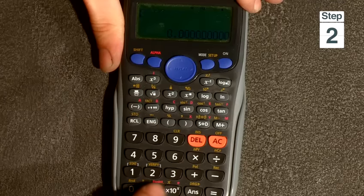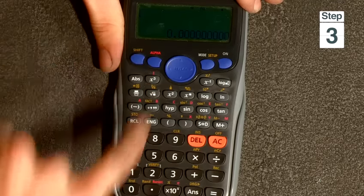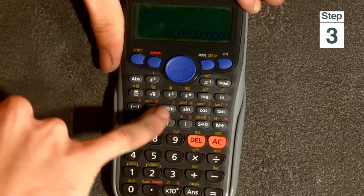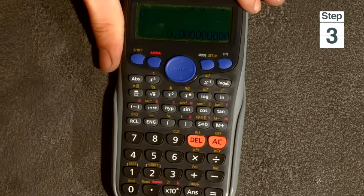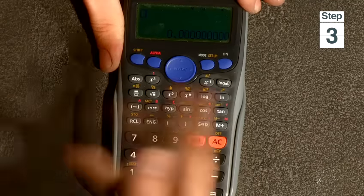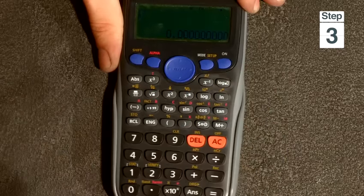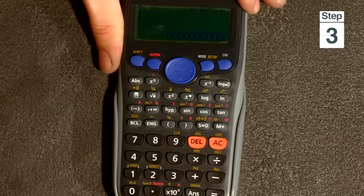Now there are some functions written in red as well, which are accessed by clicking the alpha button. You can use these functions for storing memory and the like. But the main functions come from using shift, and I'd like to show you a couple of functions that are really quite useful.